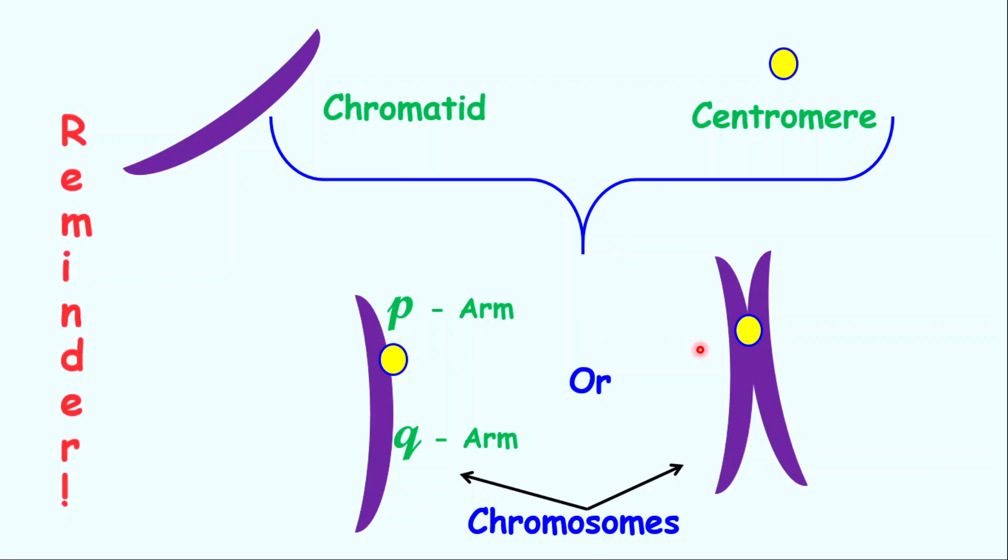So both left and right, they have one centromere, which means they are one chromosome either way. But the difference is the number of chromatids. This on the left, one chromatid. On the right, two chromatids.